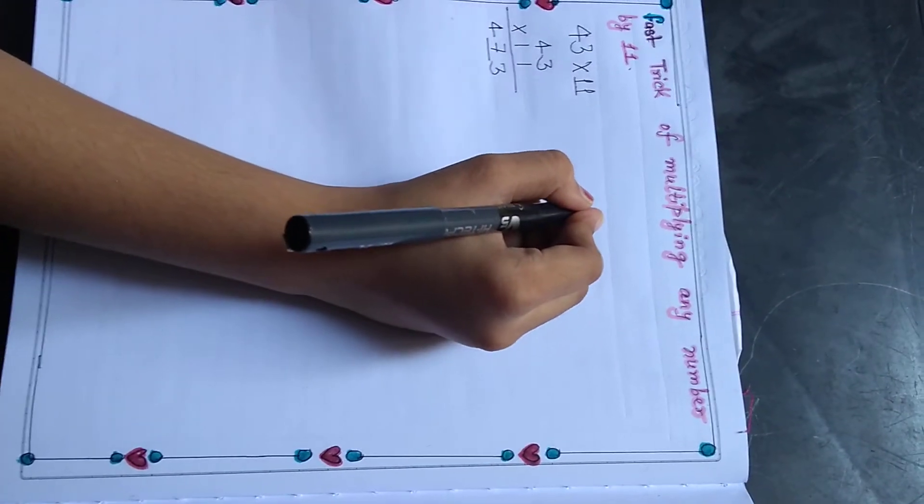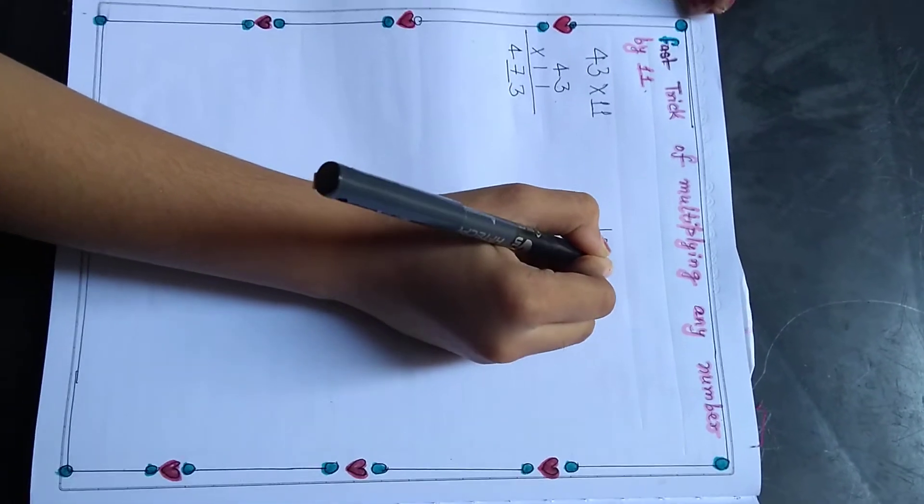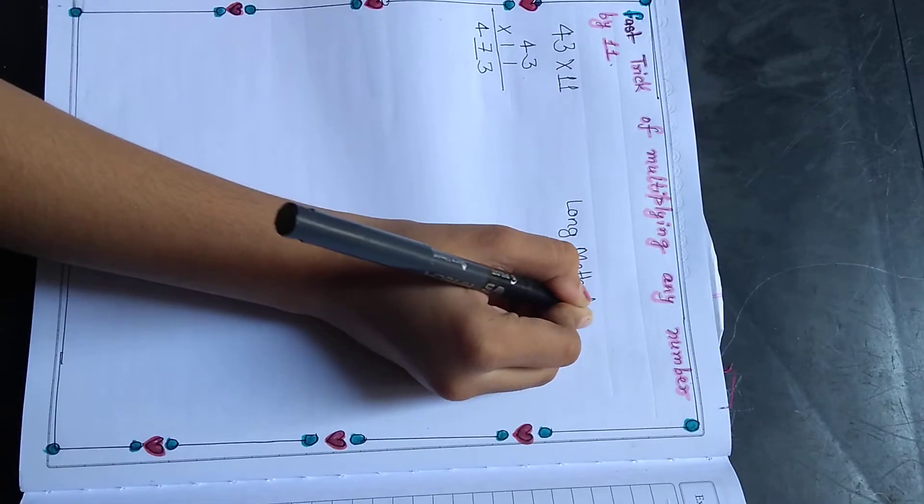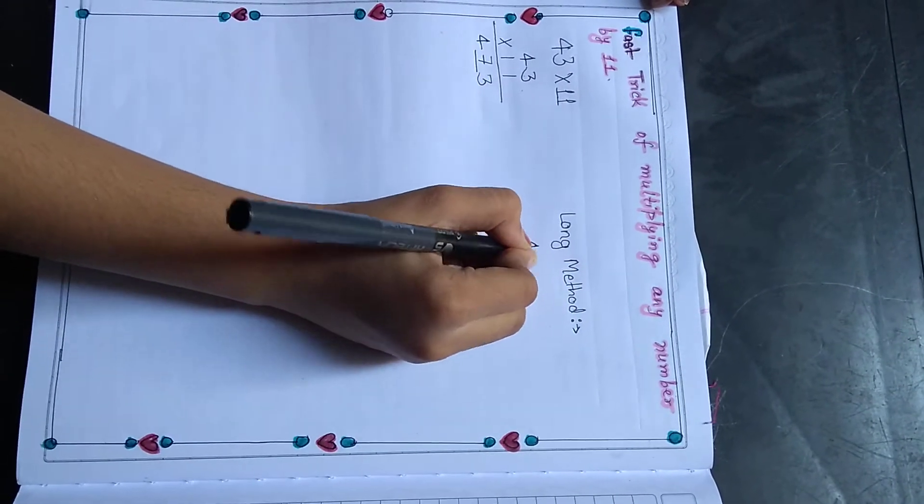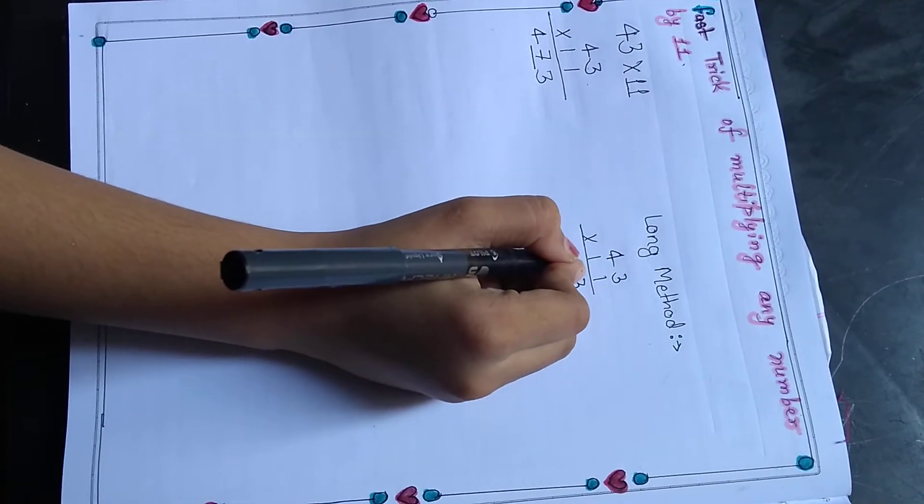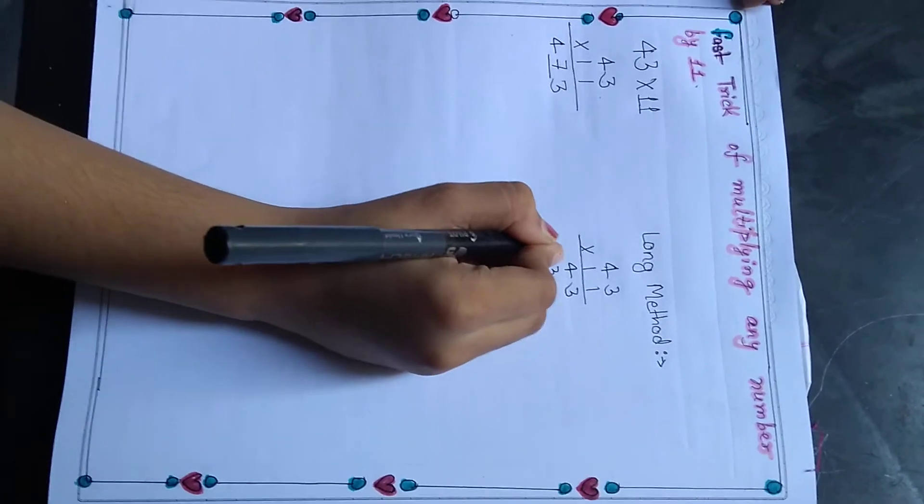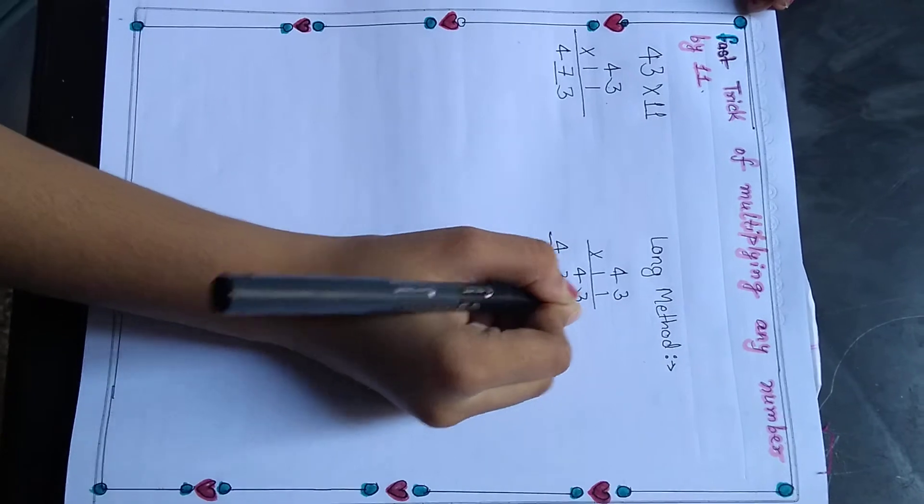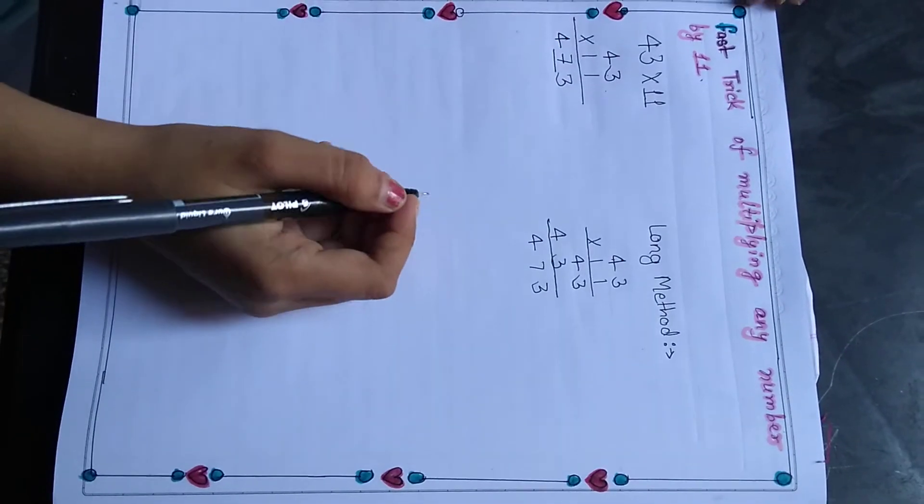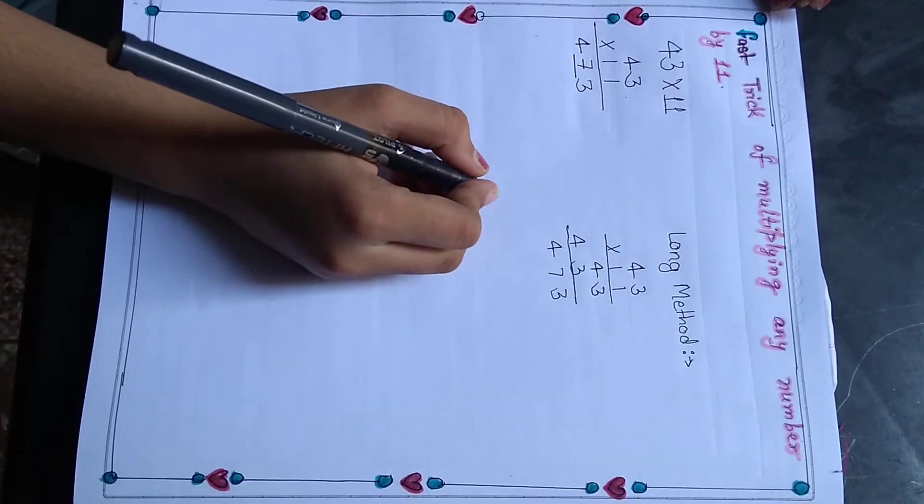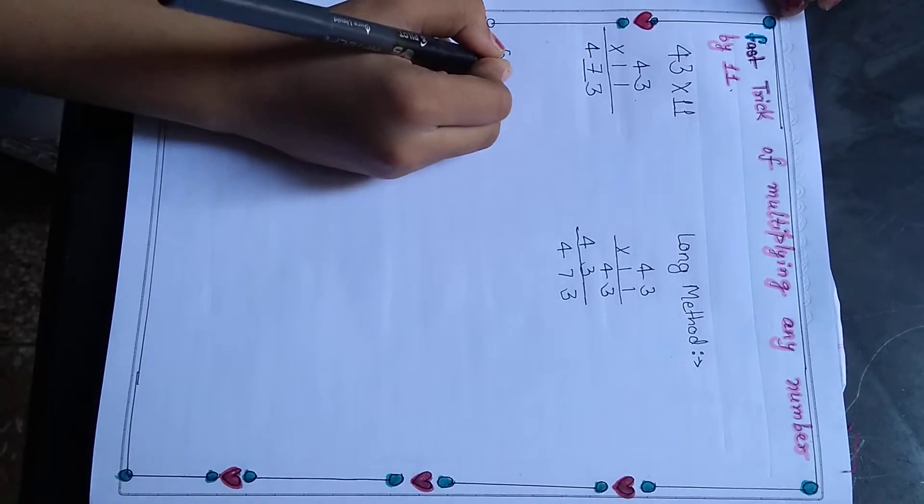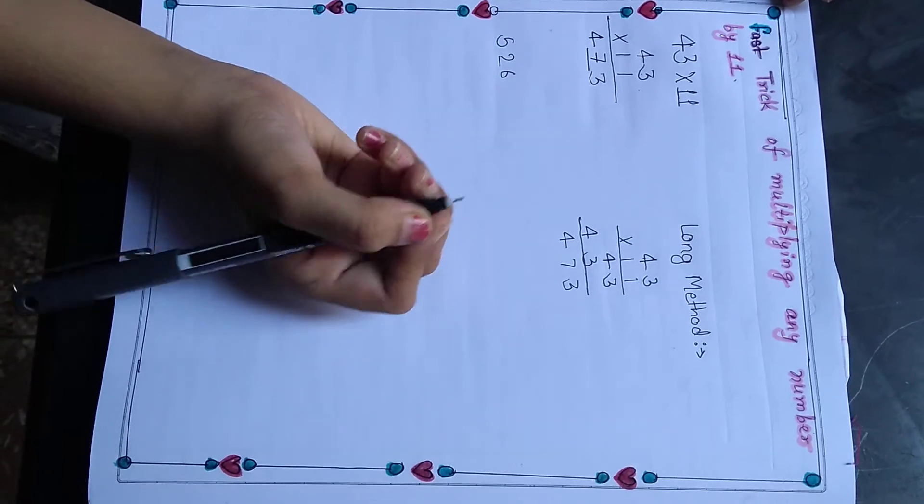Now let us check by the long method. And we have to check now what we will do with three number digits. So we will write 526 by 11.